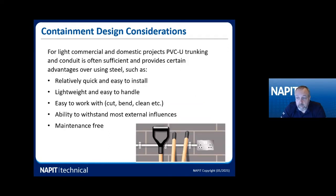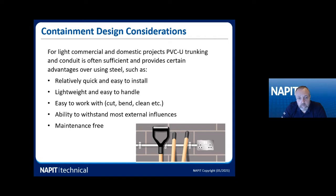For light commercial and domestic projects, a lot of clients like to use PVC-U trunking — it's light, easy to handle, easy to bend, quite cheap, and easy to work with. It'll withstand most external influences, and if you're somewhere with a lot of vapour or moisture, it's probably better than galvanized or steel conduit or trunking. Galvanized says it's rust-proof, but we've all seen damp environments where it hasn't fared well. Everything generally needs a little maintenance over a 30–40 year life cycle.